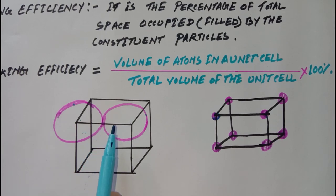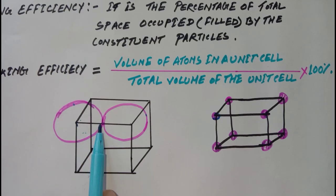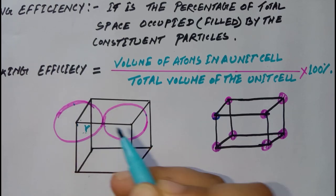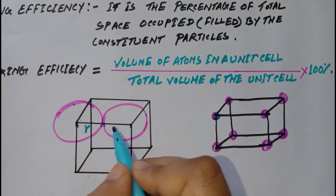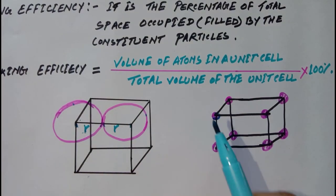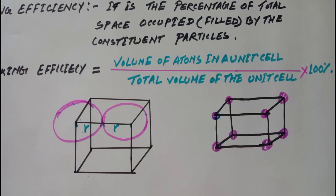The half of the distance between two neighboring atoms is called the atomic radius. The distance from the center of the nucleus to the edge of the atom is denoted as small r, and this is known as the atomic radius. Let the edge length of the unit cell be A.